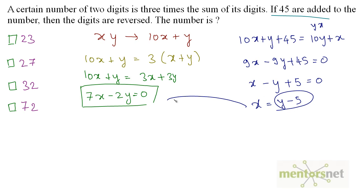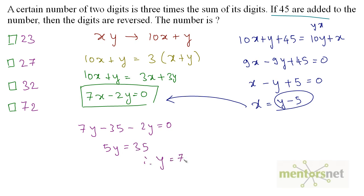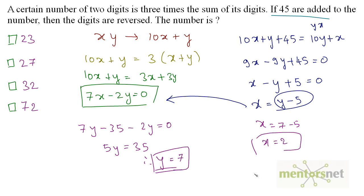Substituting x equals y minus 5 into 7x minus 2y equals 0: 7 times y minus 5 minus 2y equals 0, giving 7y minus 35 minus 2y equals 0, so 5y equals 35, therefore y equals 7. Then x equals 7 minus 5 equals 2. So x is 2 and y is 7, and the number is 27.